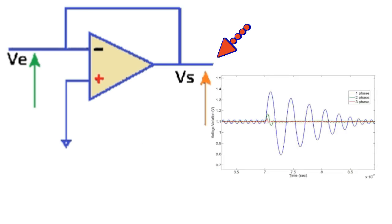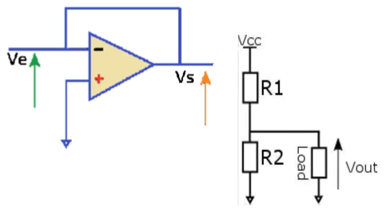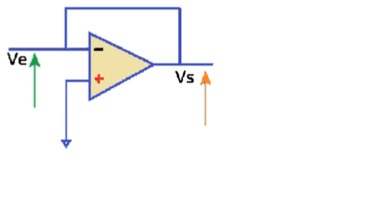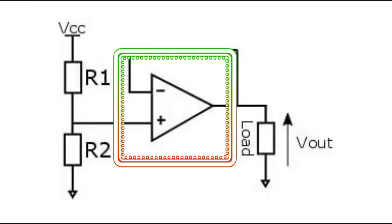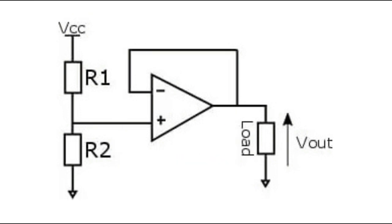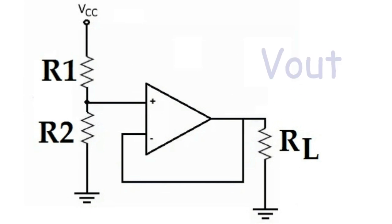To solve this problem, an amplifier is placed between the load and the voltage divider, as shown in the figure. Therefore, V out depends on R1 and R2 and not on the load value.